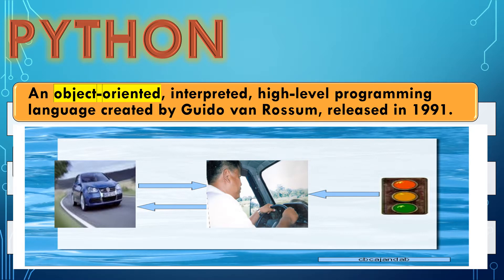To use an analogy, the objects car, driver, and stoplight show how OOP behaves. Whenever the driver sees the stoplight signal, he will stop — the car brakes and it will stop. The stoplight sends a message to the driver, the driver then gives a command to the car, and the car carries out the request of the driver.